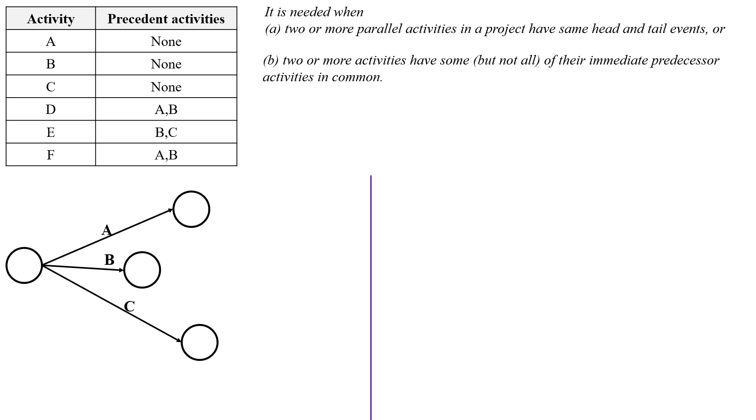Next activity D, which has immediate predecessor activities A and B. So draw the activity D like this. But this indicates the activity D will start after completion of activity A only.